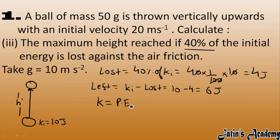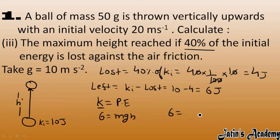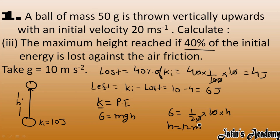The new kinetic energy of 6 joules is converted into potential energy: MGH = 6. With mass = 1/20 kg and G = 10, we calculate H = 12 meters. Therefore, the maximum height reached when 40% of the initial energy is lost against air friction is 12 meters.